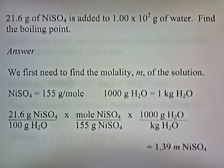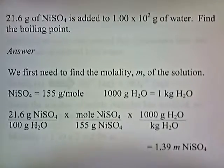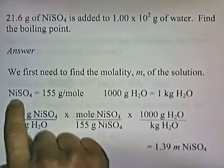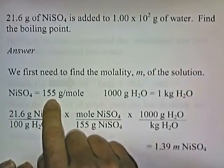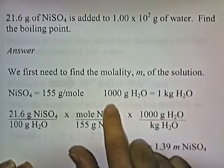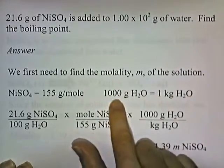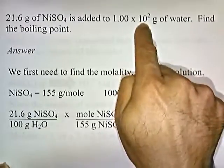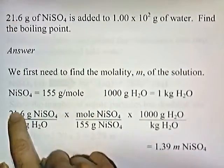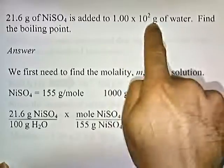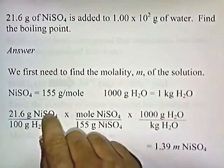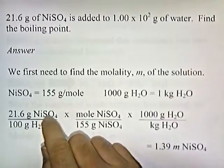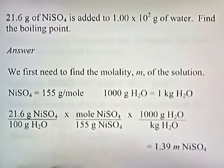21.6 grams of nickel sulfate is added to 100 grams of water. Find the boiling point. First thing we need to do is find the molality of the solution. One mole of nickel sulfate is 155 grams, and we'll use this conversion to convert grams of water into kilograms of water — 1,000 grams of water is one kilogram. We're given grams of nickel sulfate per grams of water, so 21.6 grams of nickel sulfate per 100 grams of water, and we want to convert that into moles of nickel sulfate per kilogram of water.